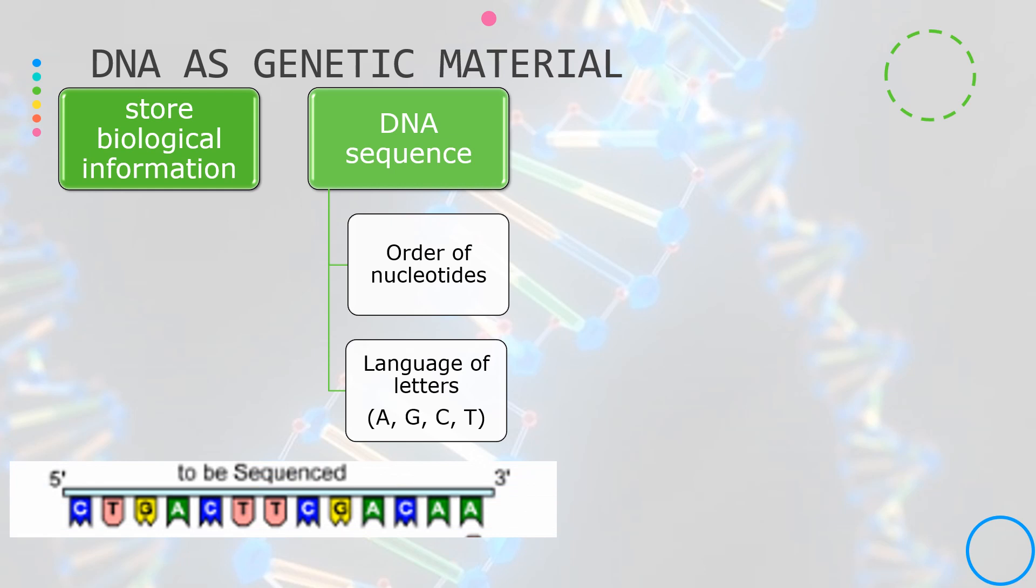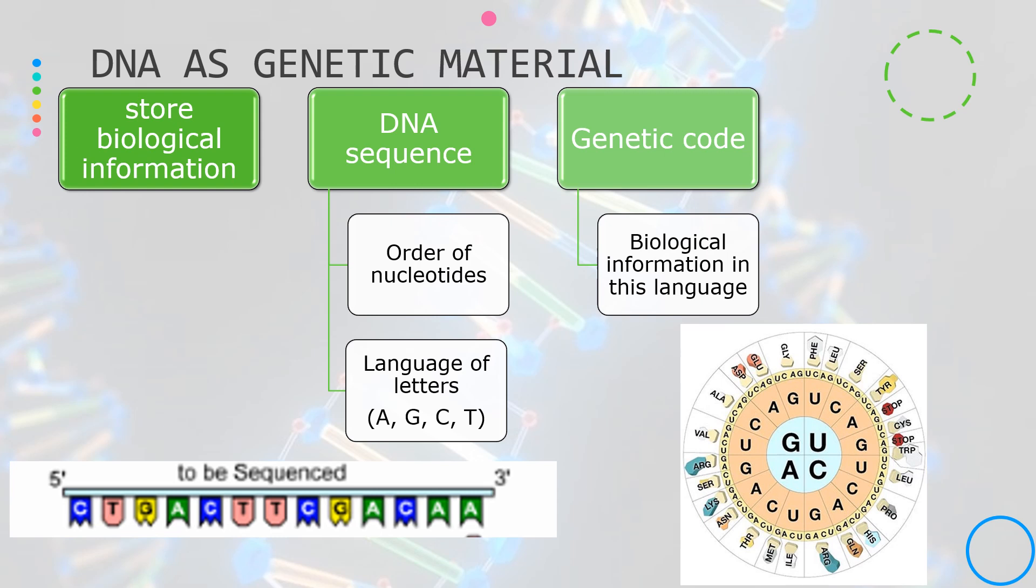In essence, this is like a language that is made up of four letters, A, C, G, and T. The biological information contained in genes is written in this language, which we all call the genetic code. The language is read through the process called gene expression.